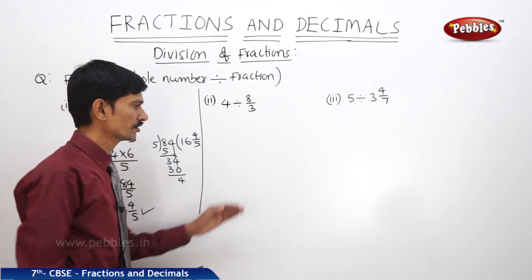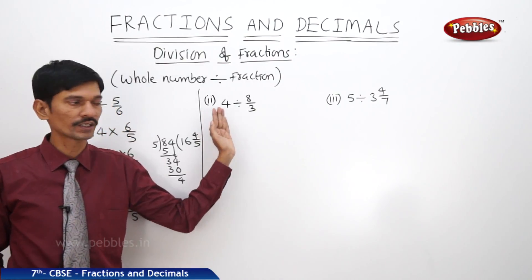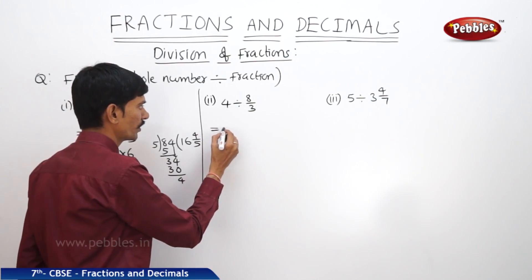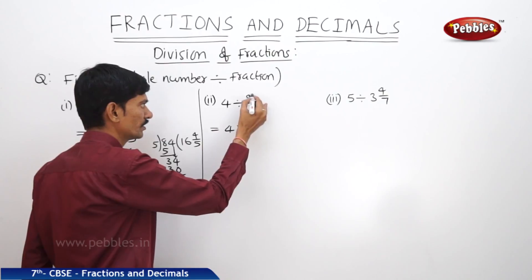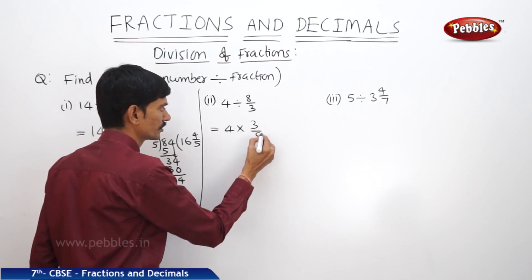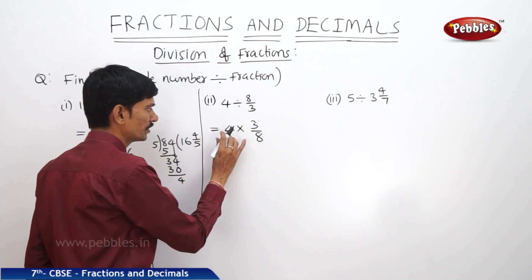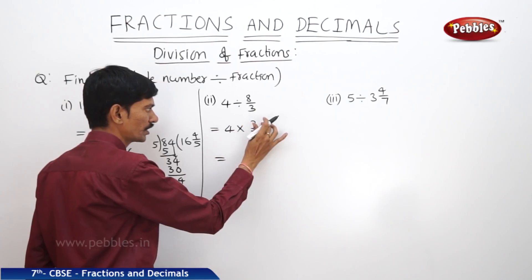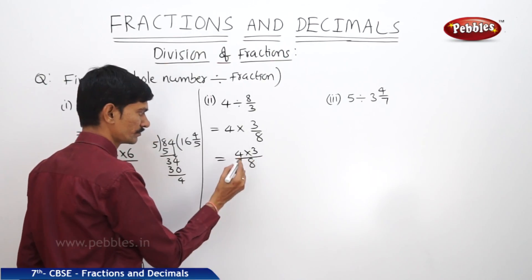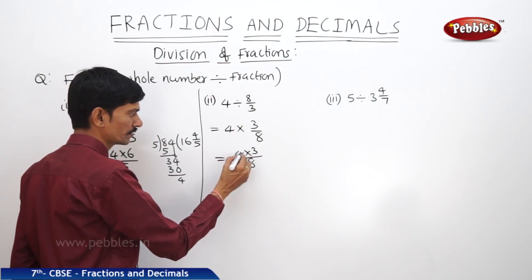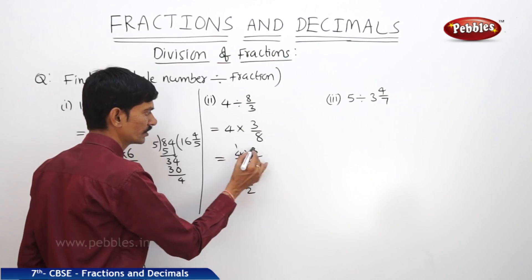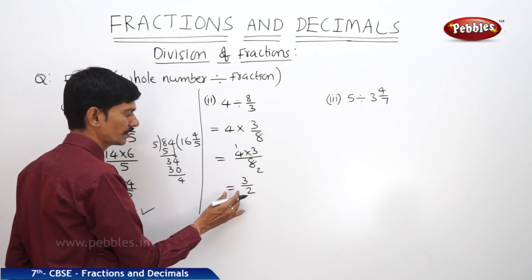Next: 4 divided by 8/3. Here also a whole number is divided by a fraction. To divide the whole number by a fraction, we multiply the whole number by the reciprocal of the fraction. The reciprocal of 8/3 is 3/8. So we get 4 × 3, divided by 8. We can cancel 4 and 8, giving us 3/2.